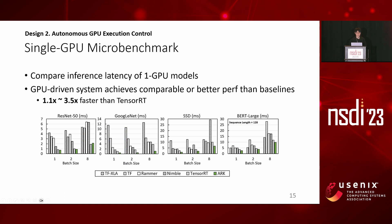In microbenchmark results on a single GPU, we test inference throughputs of four different models and compare against five different baselines. ARC performs comparably or better than baselines, up to 3.5 times faster than TensorRT.